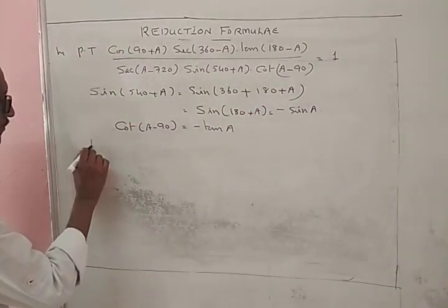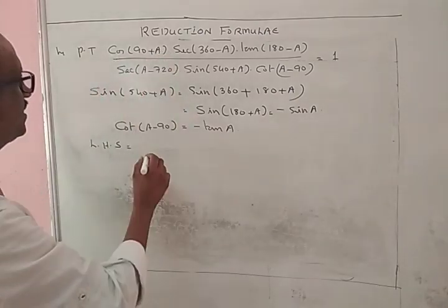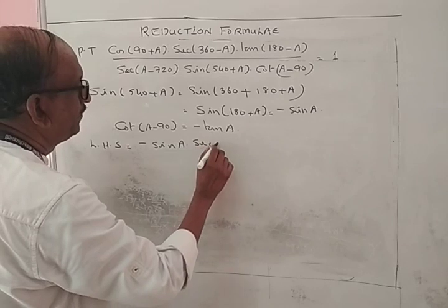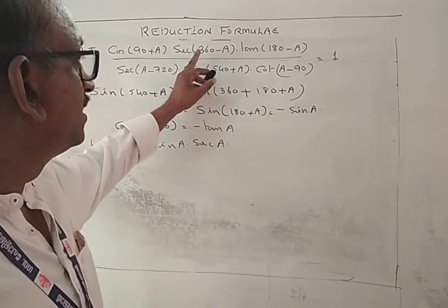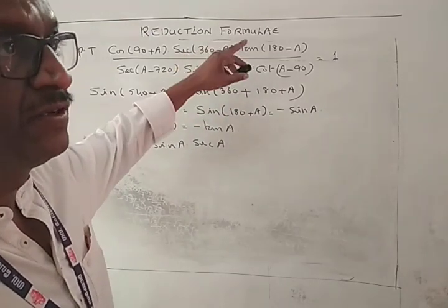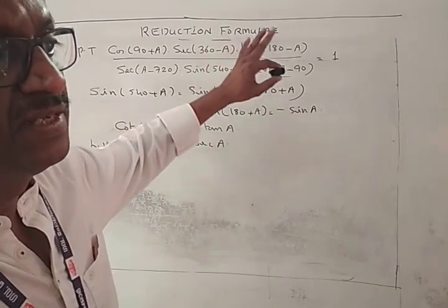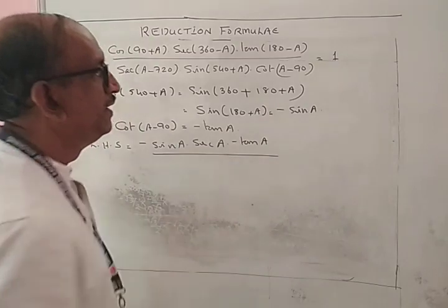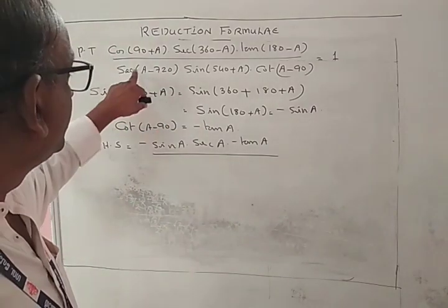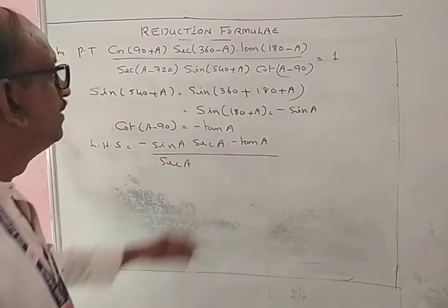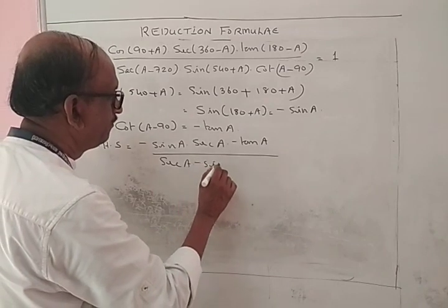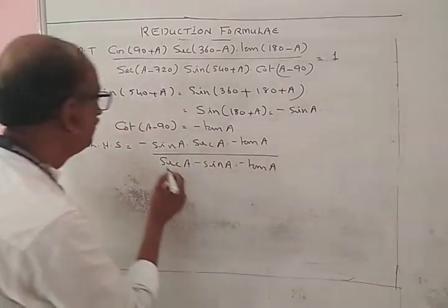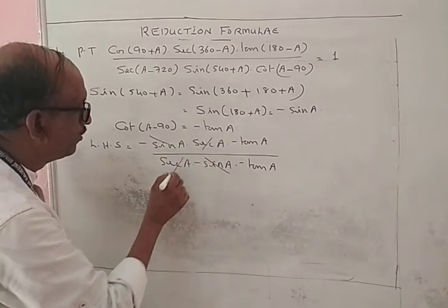Checking the left hand side: cos(90 + A) = minus sin A, sec(360 - A) = sec A, tan(180 - A) = minus tan A, divided by sec, times sin(540 + A) = minus sin A, and cot(A - 90). After all cancellations, the answer is 1.